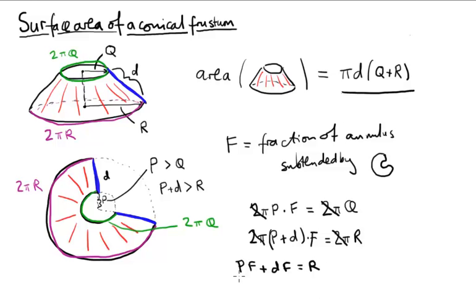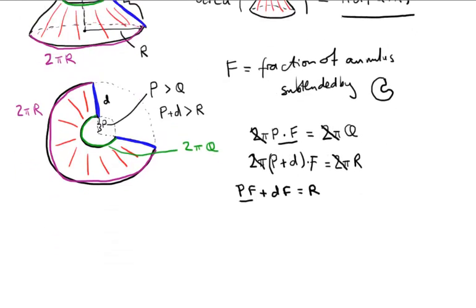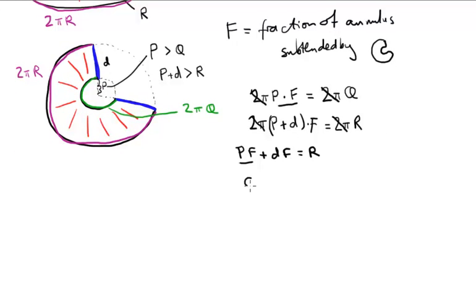But we have p times f here, and we have p times f here. So let's substitute this q in for this p times f. So we have q plus d times f equals r.